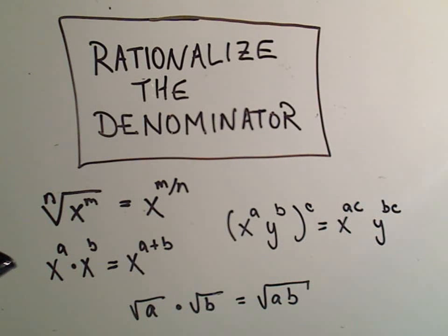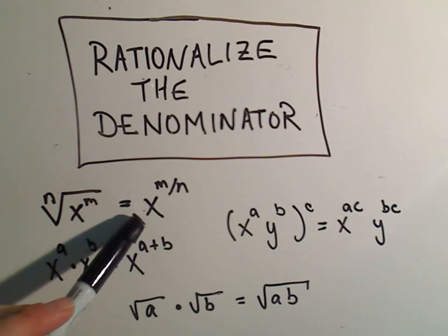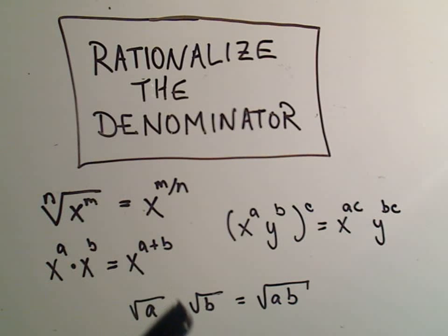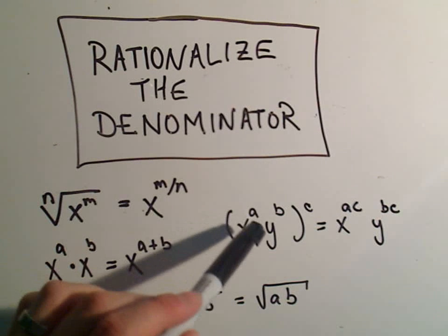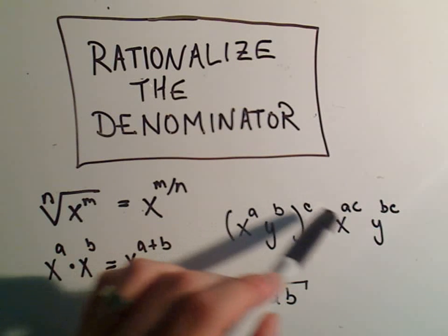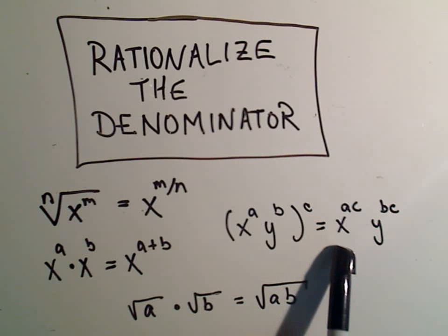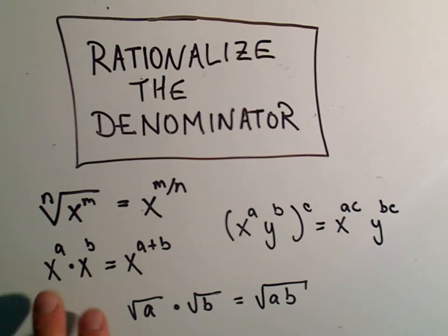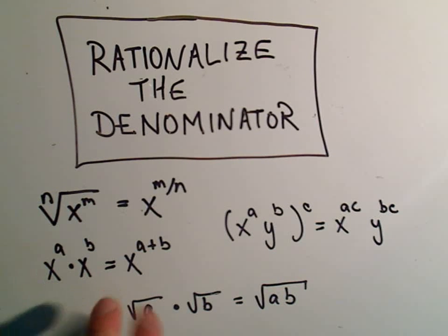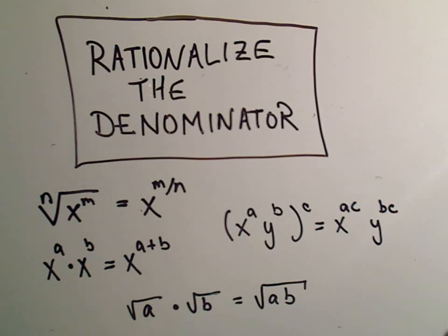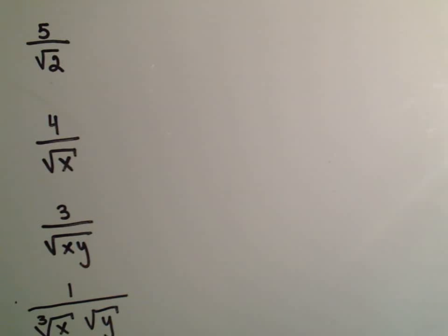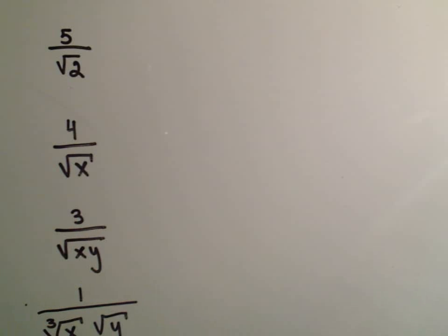A couple of rules that may be useful. If you have the nth root of x raised to the m power, we can write that as x raised to the m over n. If you have x to the a times y to the b raised to the c power, that's equivalent to x to the ac times y to the bc. If it's x to the a times x to the b, that's x to the a plus b. And the square root of a times the square root of b is the square root of ab.